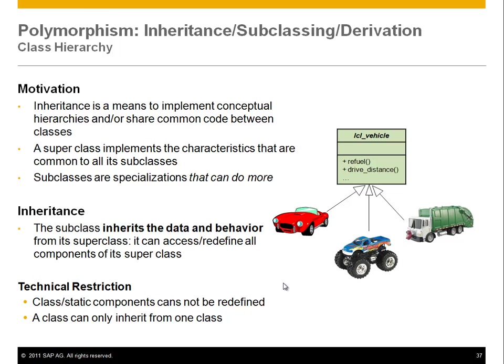You want to isolate not only the definition but also the implementation. The refuel method and drive distance are the same across subclasses, which means the attributes that go with them should be defined on the superclass. You can then define a subclass — it inherits all data and behavior, so data and methods, from the superclass. You can access, and more importantly, redefine or extend components of the superclass.